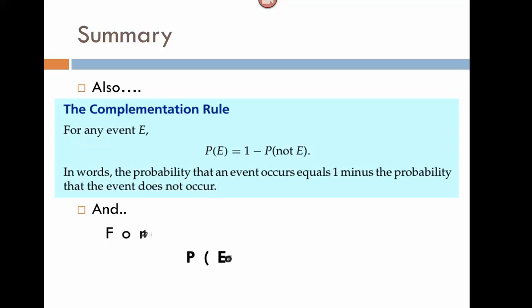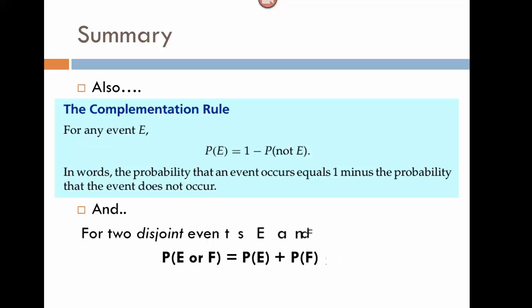And for two disjoint events — meaning they cannot occur at the same time — the probability that either E or F occurs is equal to the probability of E plus the probability of F.